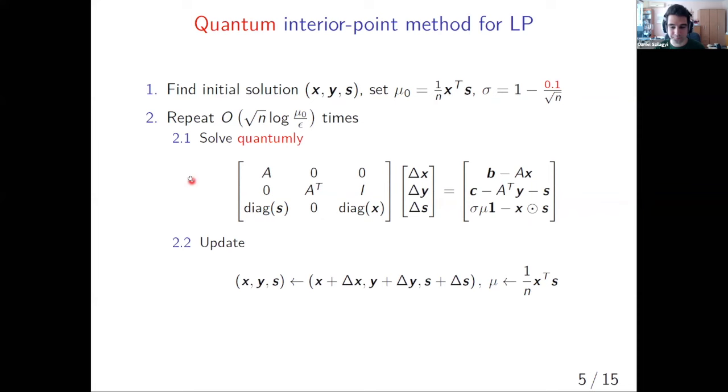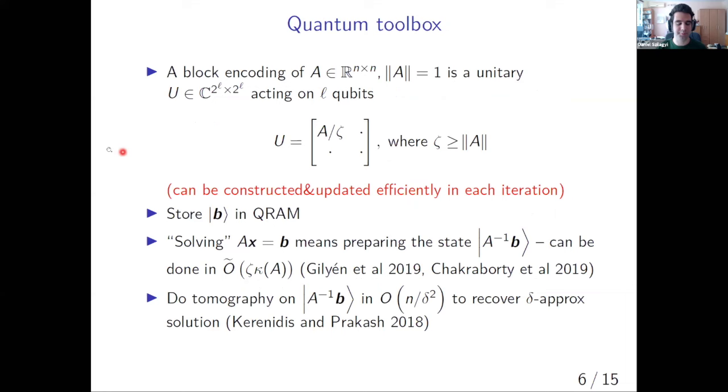What does it mean? We use the well-developed quantum linear algebra toolbox. Maybe the most important building block is the block encoding framework, where you embed your data matrix inside a big unitary. You store the right hand side of your linear system in Q-RAM. And this allows you to efficiently prepare the quantum state that corresponds to the solution of this linear system A x equal to b. The complexity of doing this is poly-logarithmic in the dimension of our linear system, but it also has some dependence on some other problem-specific factors such as the condition number of our Newton matrix.